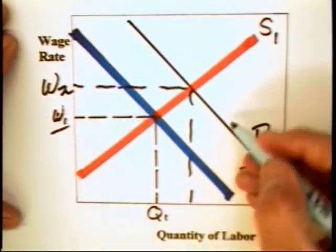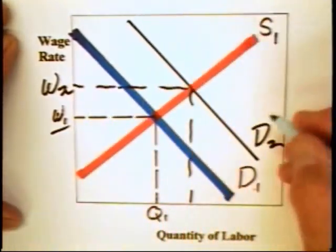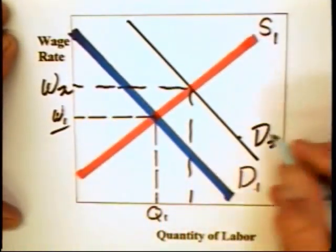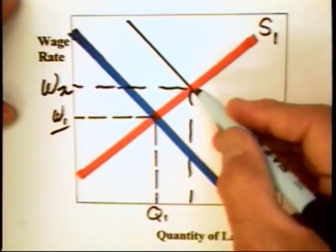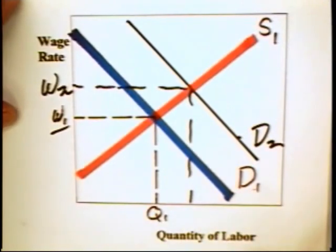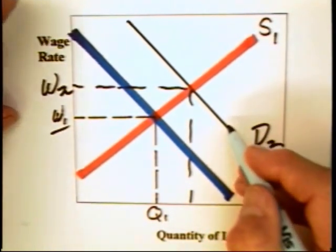It could also be that this group of workers gets a higher wage rate because the price of the final product incorporated into this demand curve is, in fact, greater. That is, the workers can be equally productive in terms of the units produced, but the value of the final product can be greater.